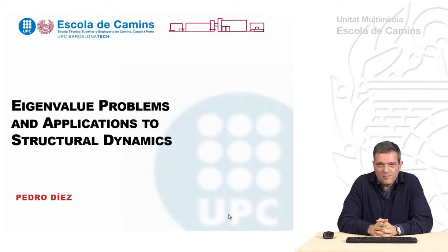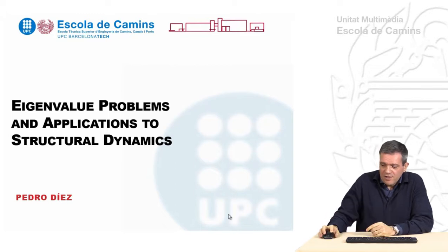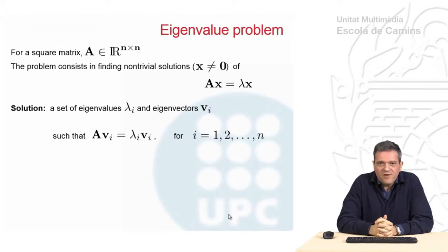We are going to discuss the application of the so-called eigenvalue problems to structural dynamics and structural mechanics in general. The eigenvalue problem is a problem in which the input data is a matrix, square matrix A of size n, and we are looking at the solutions of the problem A times x, vector x equal to lambda x, being lambda a scalar value.